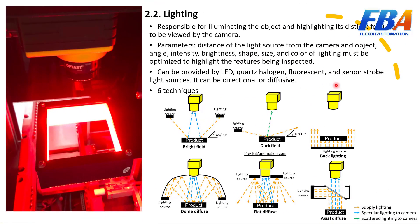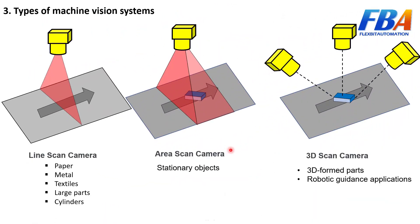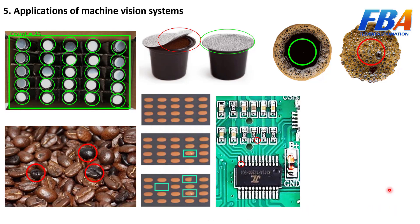Lighting techniques in machine vision systems — I classify these as six techniques. We also look at 3D scan camera applications. A vision camera can inspect damaged ICs, bad welding, and burning on PCBs.